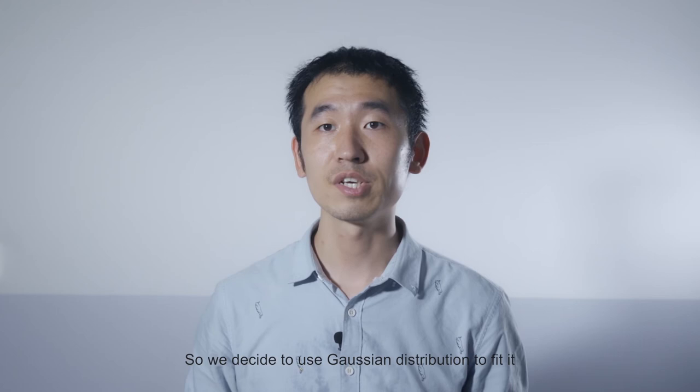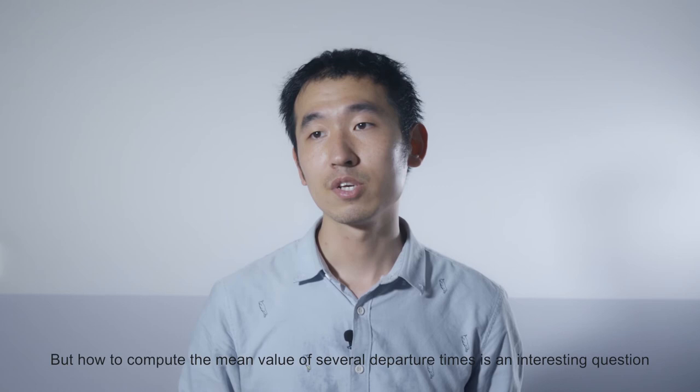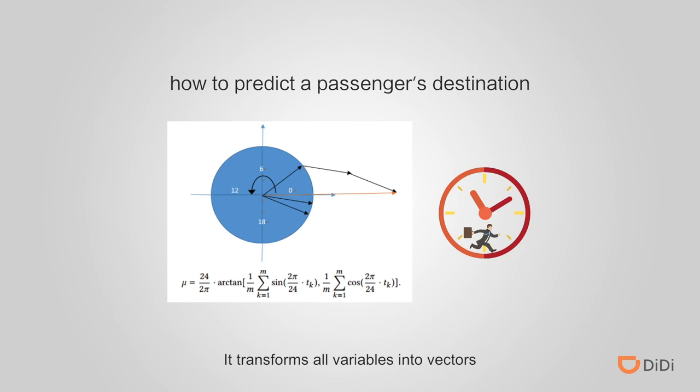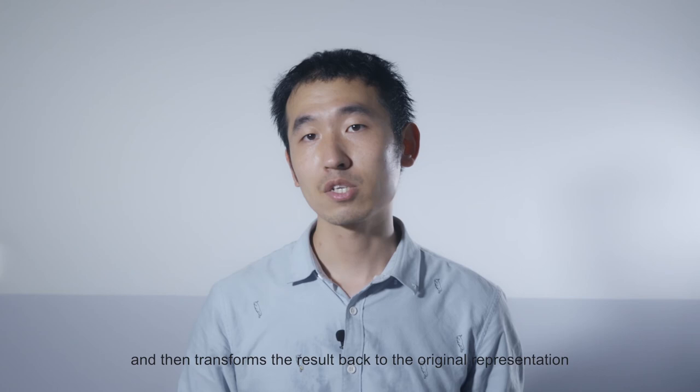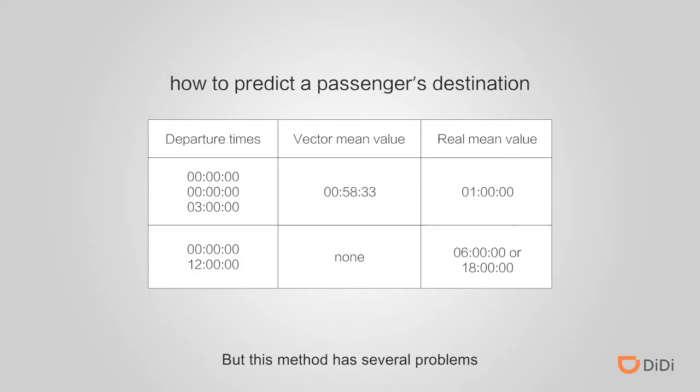So we decided to use the Gaussian distribution to fit it. But how to compute the mean value of several departure times is an interesting question. One traditional method transforms all the variables into vectors, computes the average of all the vectors, and then transforms the result back to the original representation. But this method has several problems, as shown in this case.